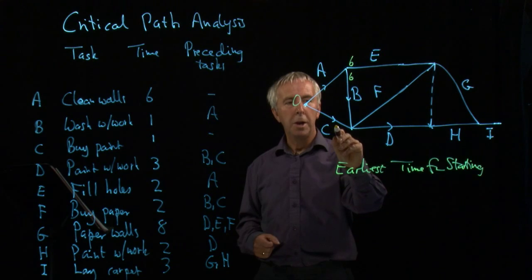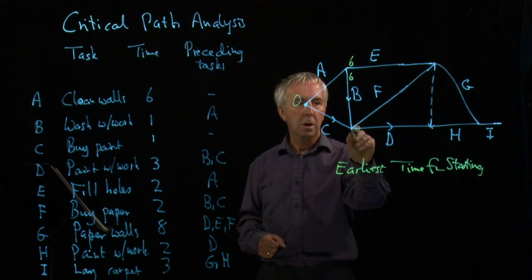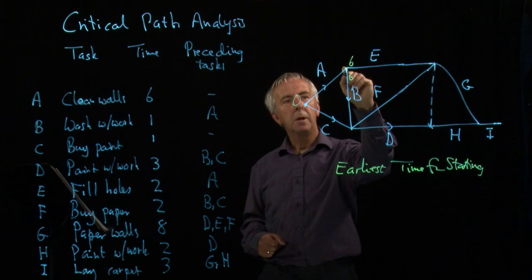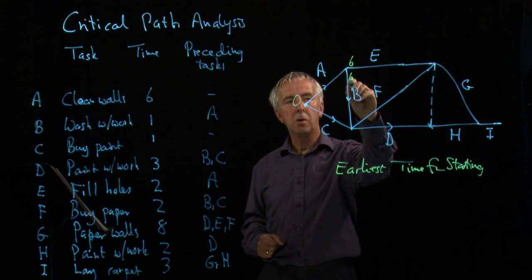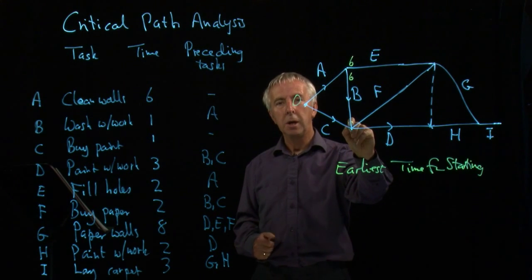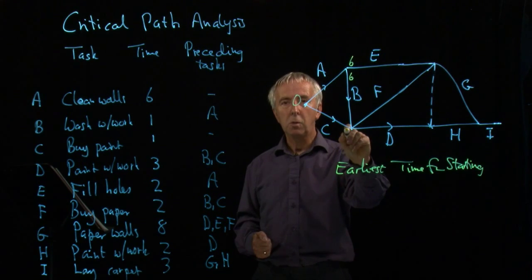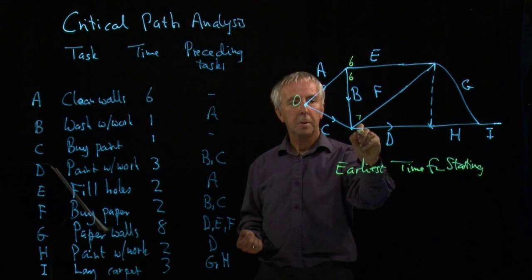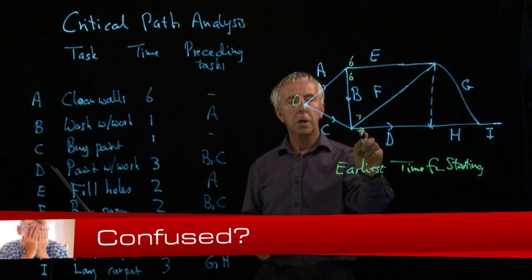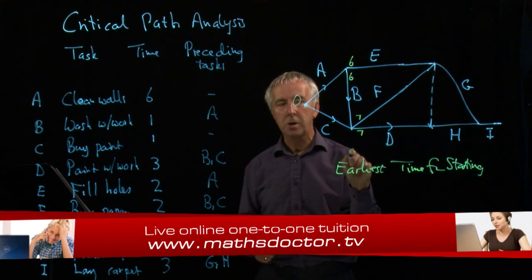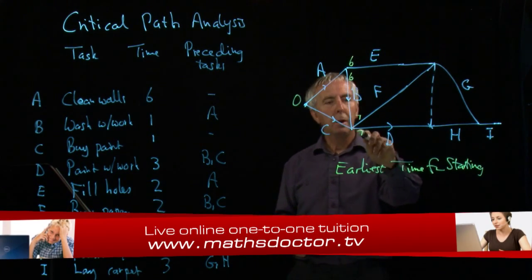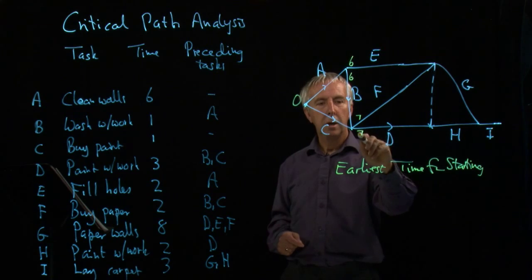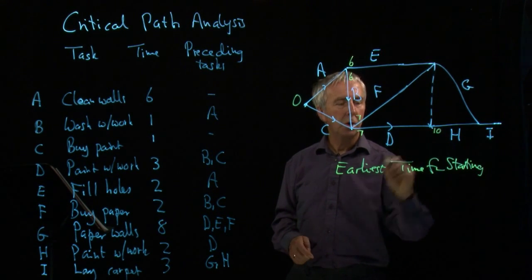C starts at zero, and C takes one. So the earliest I could start these, you might think is one. But I've also got to have done B. So if the earliest I can start B is six, and B takes one, I can't have completed B until after seven hours. C only takes one hour. So the earliest I can start these is the larger of those two. Seven. You can't start an activity until all the preceding ones have been done, and you have to wait for the slowest. Let's go along here now. I can start H once I've finished D. D takes three, and I couldn't start D until seven, so I can't start H until ten.